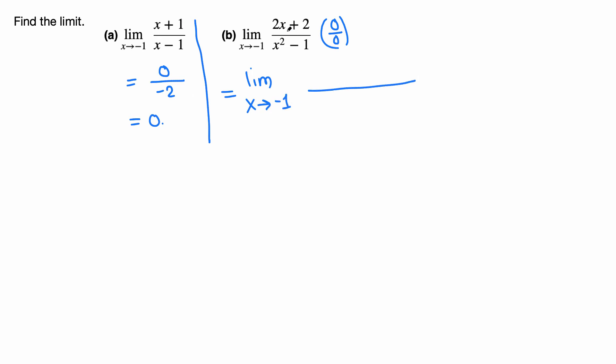Simplify means we factor the top if possible, factor the bottom, and cross out the common factors. So 2x plus 2, we can factor 2 out, that leaves x plus 1.